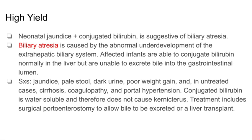Let's take a closer look at another high-yield condition. If a neonate is jaundiced and labs show elevated conjugated bilirubin, this is suggestive of biliary atresia. Biliary atresia is caused by abnormal underdevelopment of the extrahepatic biliary system. The neonates can conjugate bilirubin normally in the liver, but are unable to excrete bile into the GI lumen. These patients can present with jaundice, pale stool, dark urine, and poor weight gain, and if left untreated, they can develop cirrhosis, coagulopathy, and portal hypertension.